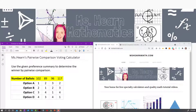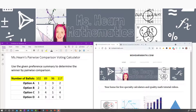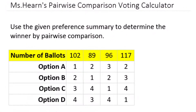Hi, I'm Ms. Hearn. Let's get started. In this video we're going to talk about how to use my pairwise comparison voting calculator. We're given a preference summary, which is a list of how many people ranked candidates in a certain way, and we're going to determine the winner by pairwise comparison by plugging the information into my online calculator.